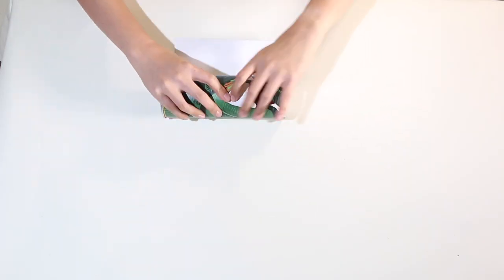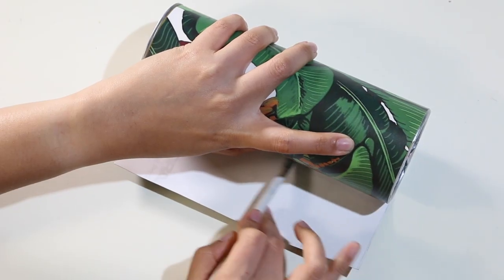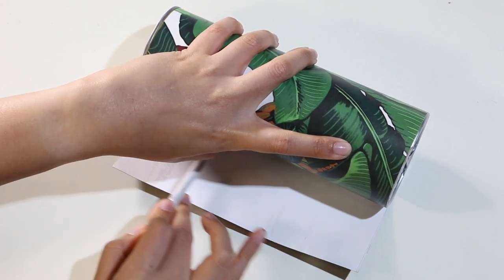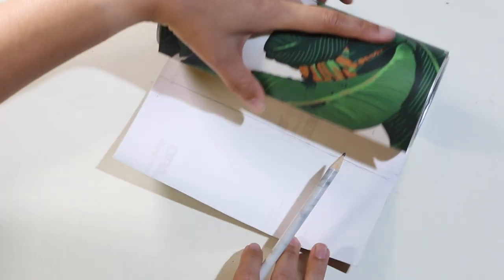Now wrap the piece around the can and mark out on the top and bottom the points where the tips meet. It's okay if it's not fully accurate at this point.